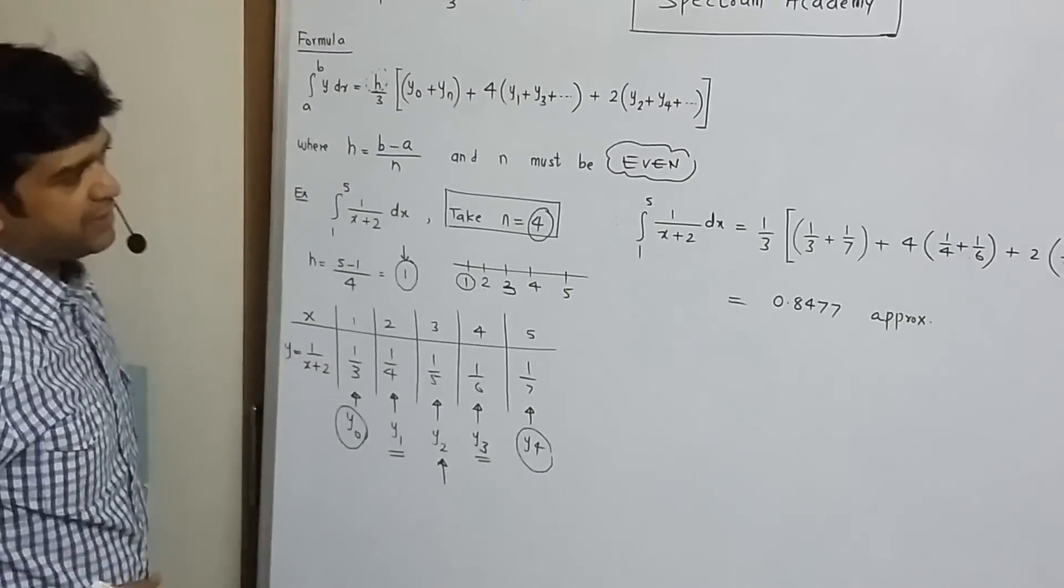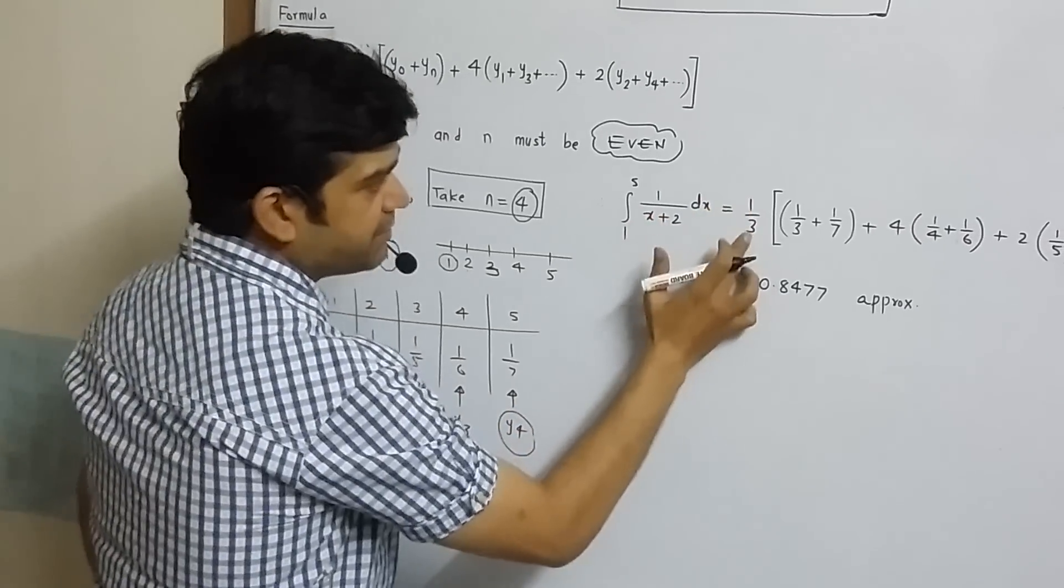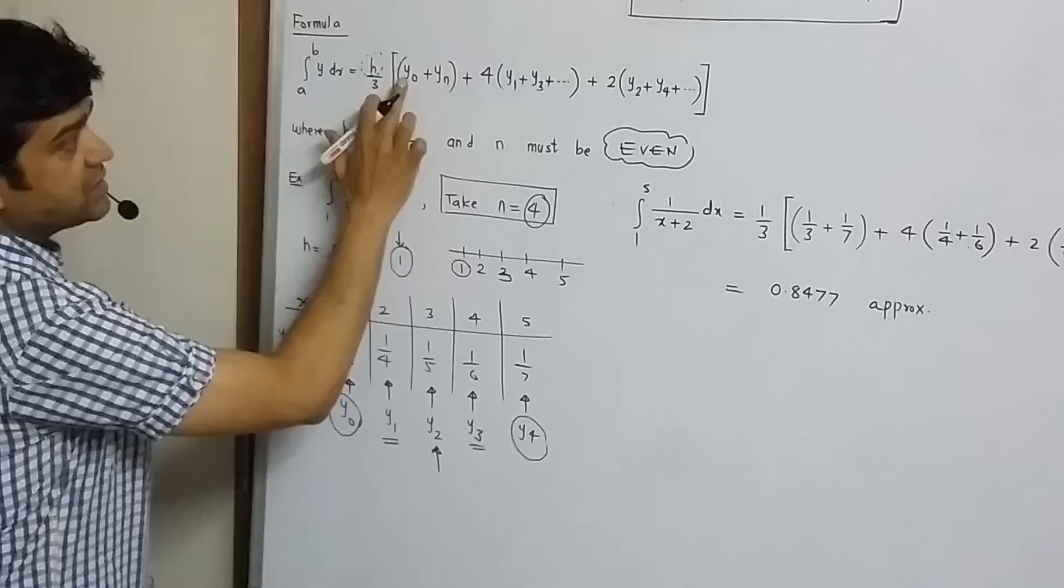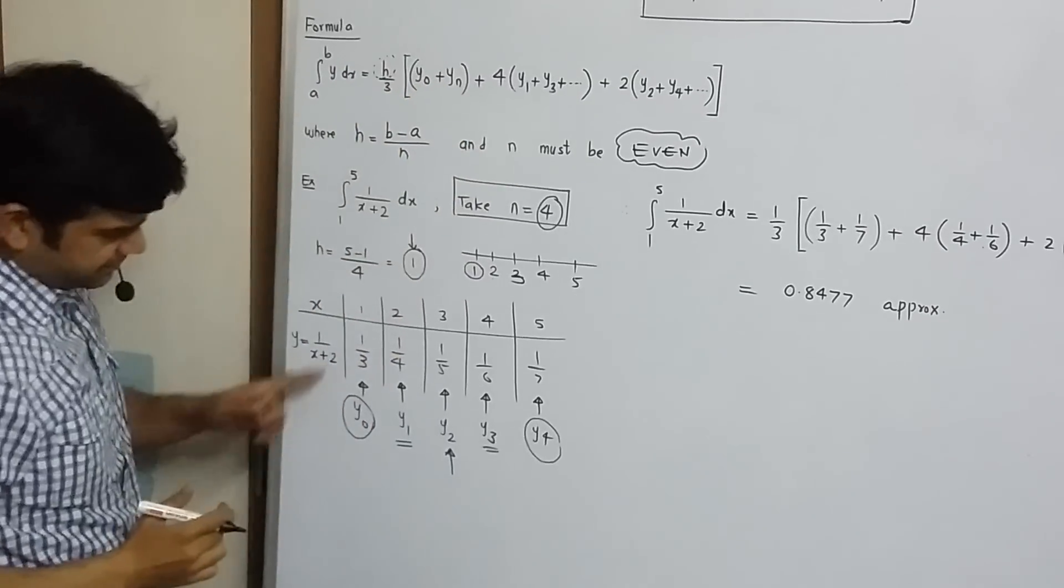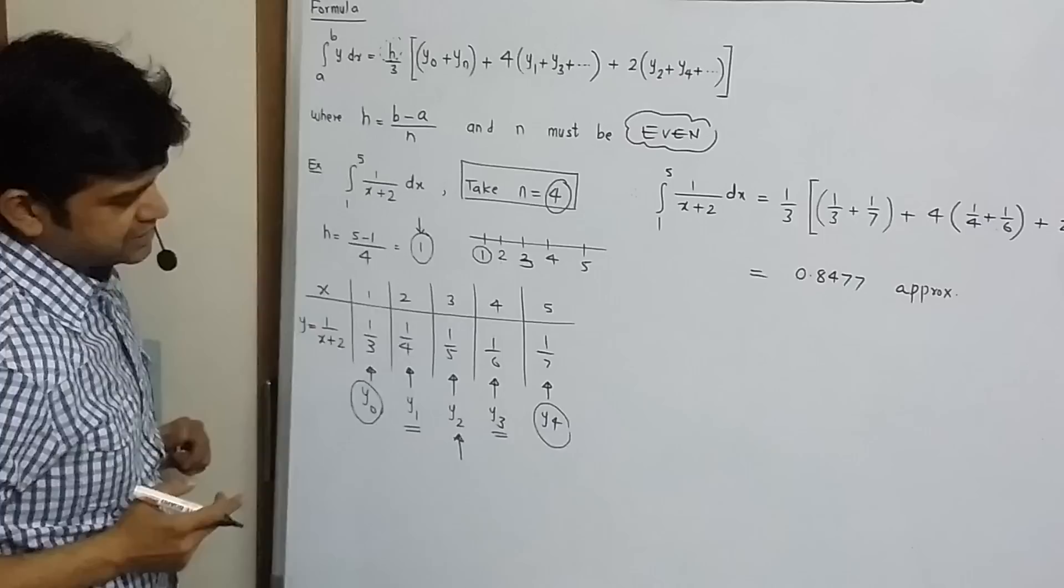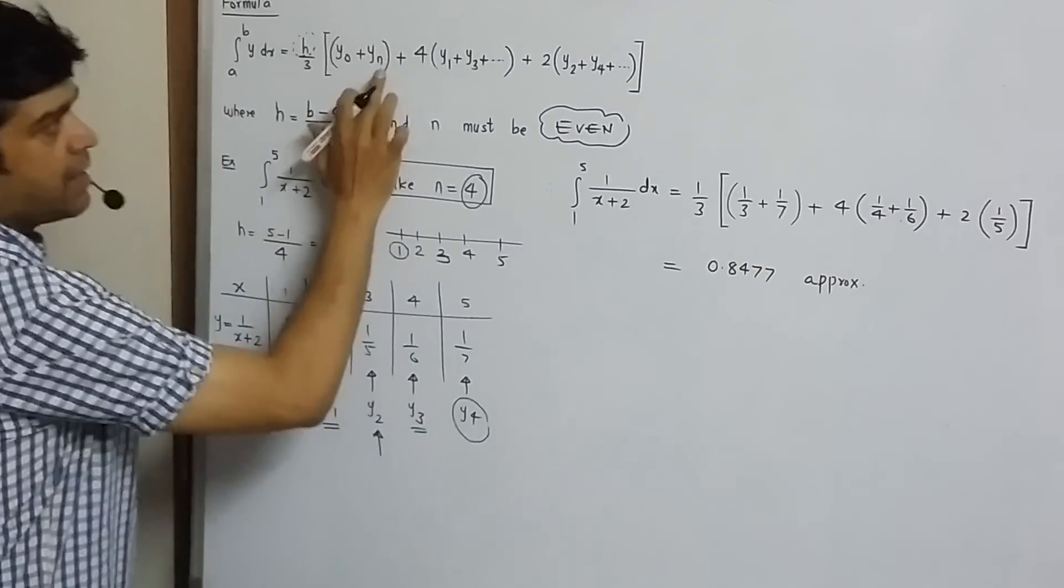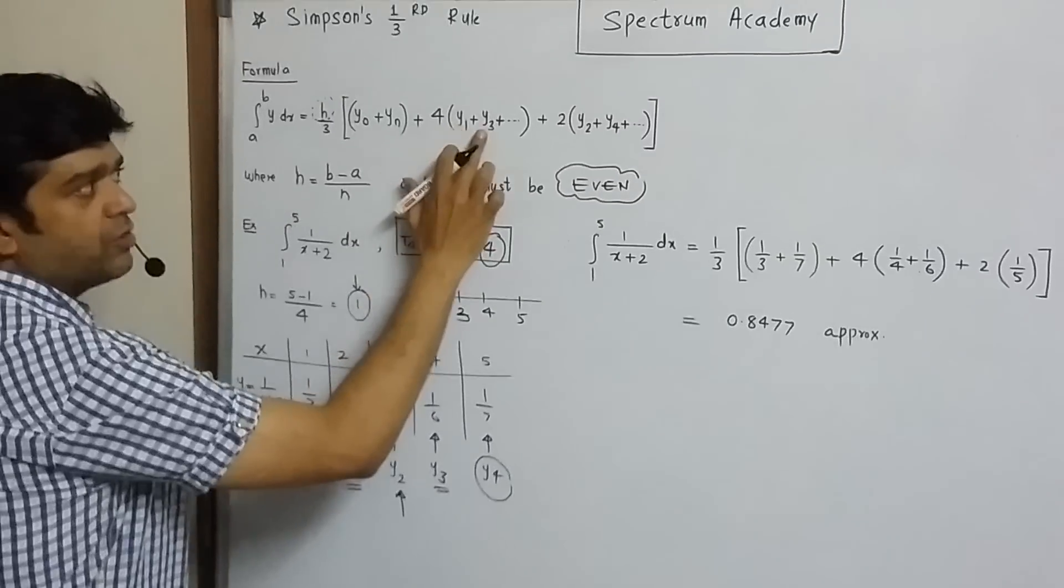Let's put in the formula. h by 3, what is h? 1. So, 1 by 3. Sum of extreme ordinates. Extreme ordinates are 1 by 3 and 1 by 7. So, sum of extreme ordinates plus 4 times odd ordinates.